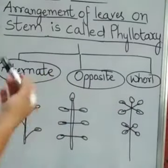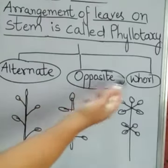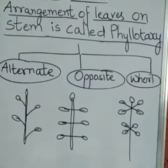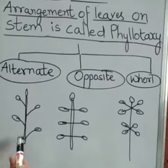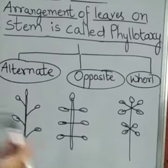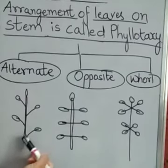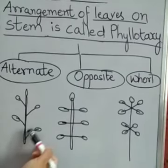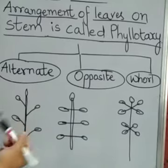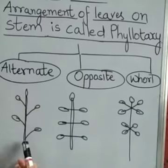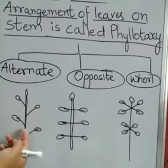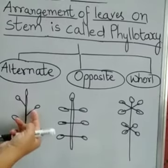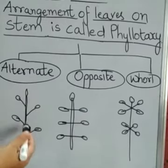The three types of phyllotaxy are: alternate, opposite, and whorled. In alternate phyllotaxy, you can see that the leaves are arranged alternately — one leaf is present, and the other is at a distance, then another, like this. This is alternate phyllotaxy. The second type is opposite phyllotaxy, where the leaves are arranged opposite to each other.